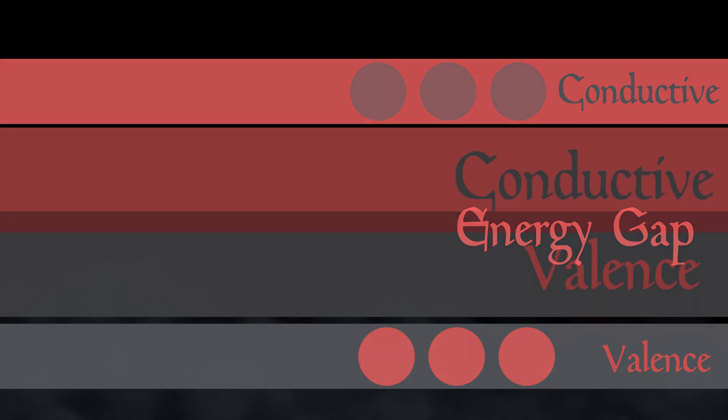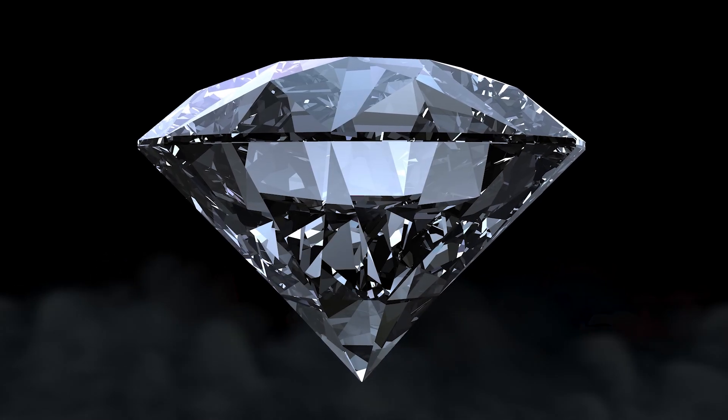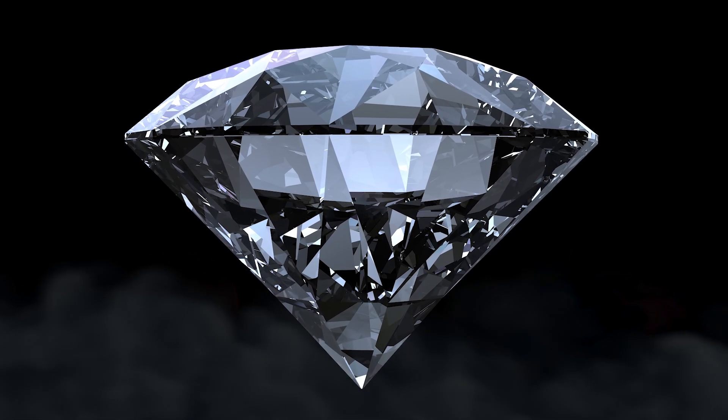In metals for instance, the valence and conductive bands actually overlap. And it's not a coincidence that solid insulators like glass and diamonds are transparent.